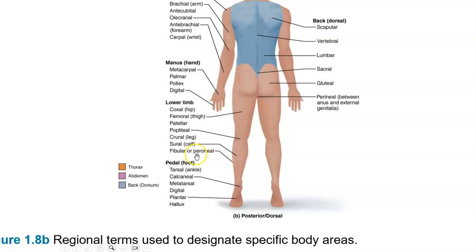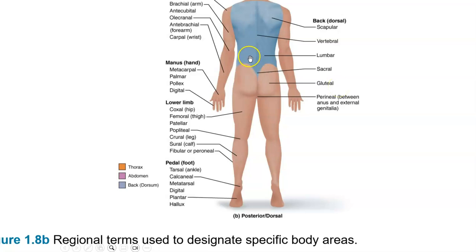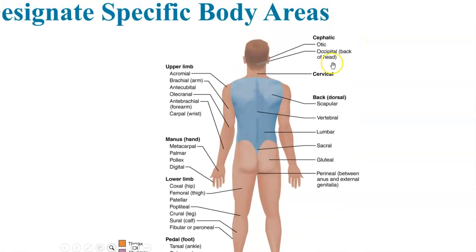Note the difference between peroneal — the lateral portion of the leg — versus perineal, which is between the anus and the external genitalia. Gluteal is the buttocks. Sacral is the lowest portion of the back. Lumbar is the lower back. Vertebral refers to the region of the vertebrae or spine. Scapular is the shoulder blade. The word for back is dorsal. The ears are the otic region and the back of the head is the occipital region.